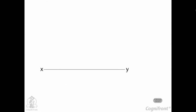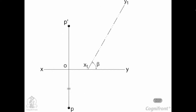To draw the orthographic views, draw XY and mark P dash and P. Draw X1, Y1 making the angle beta with XY. Through the front view P dash, draw a projector P dash P1 perpendicular to and intersecting X1, Y1 at O1, such that P1 O1 is equal to PO. P1 is the required auxiliary top view.